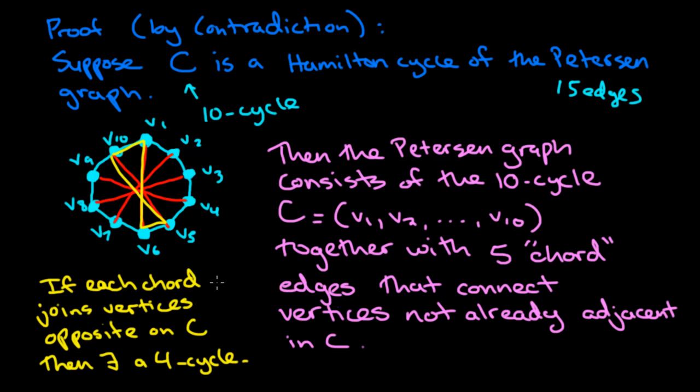So that means that if each chord joins vertices opposite on the cycle C, then there exists a four cycle. Here it is, drawn in yellow. And that's a contradiction because we know that in the Petersen graph, there are no cycles of length three or four. The first cycle you get has length five.